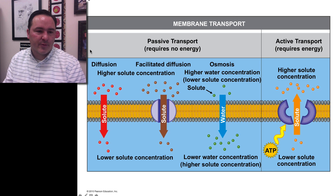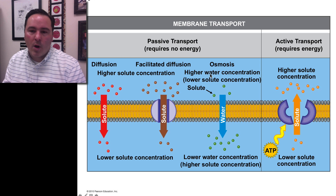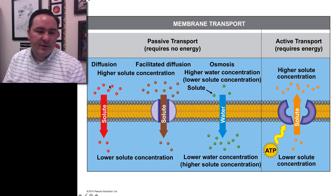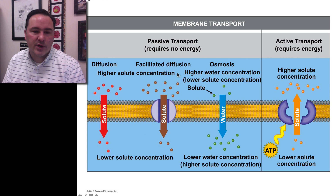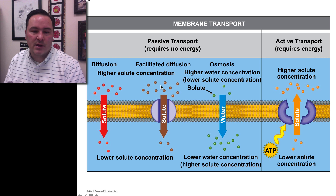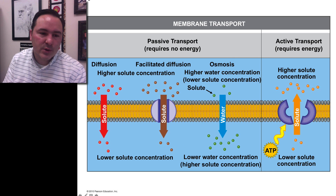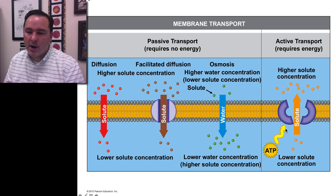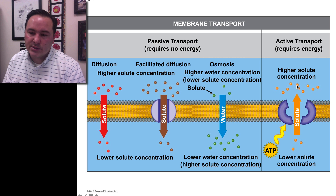To summarize: osmosis is where water moves from a low solute concentration to a higher solute concentration — in other words, from where water concentration is higher to where it's lower relative to solutes — and that can happen freely across the membrane. Simple diffusion is where molecules move across the membrane from higher to lower concentrations. Facilitated diffusion requires the use of a protein that opens a channel so solutes can flow from high to low concentrations. All of this requires no energy — it is passive transport. Active transport requires energy and moves solutes from a lower concentration to a higher concentration.